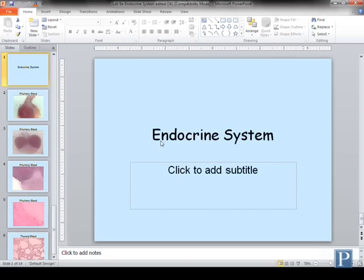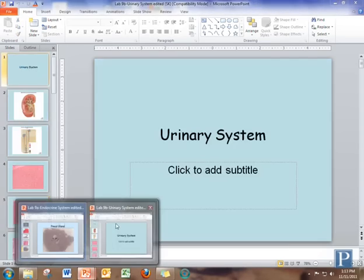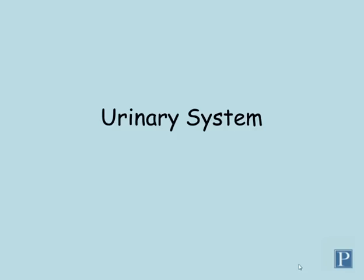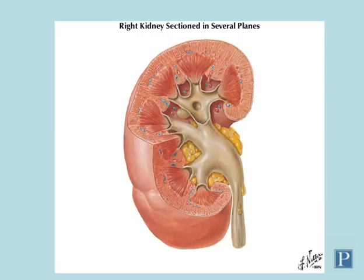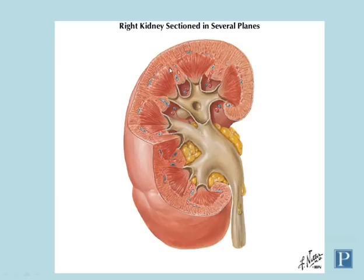That's it for the endocrine system. Let's take a look at the urinary system. This is an illustration from Netter's showing the gross anatomy of the kidney. We're not going to focus on gross anatomy in lab, but in general there are two major functional components to the kidney. The outer layer is called the cortex, and the inner layer is called the medulla. Note that the medulla is not continuous, but rather separated by parts of the cortex which extend inward, found in these pyramid-like structures called medullary or renal pyramids.